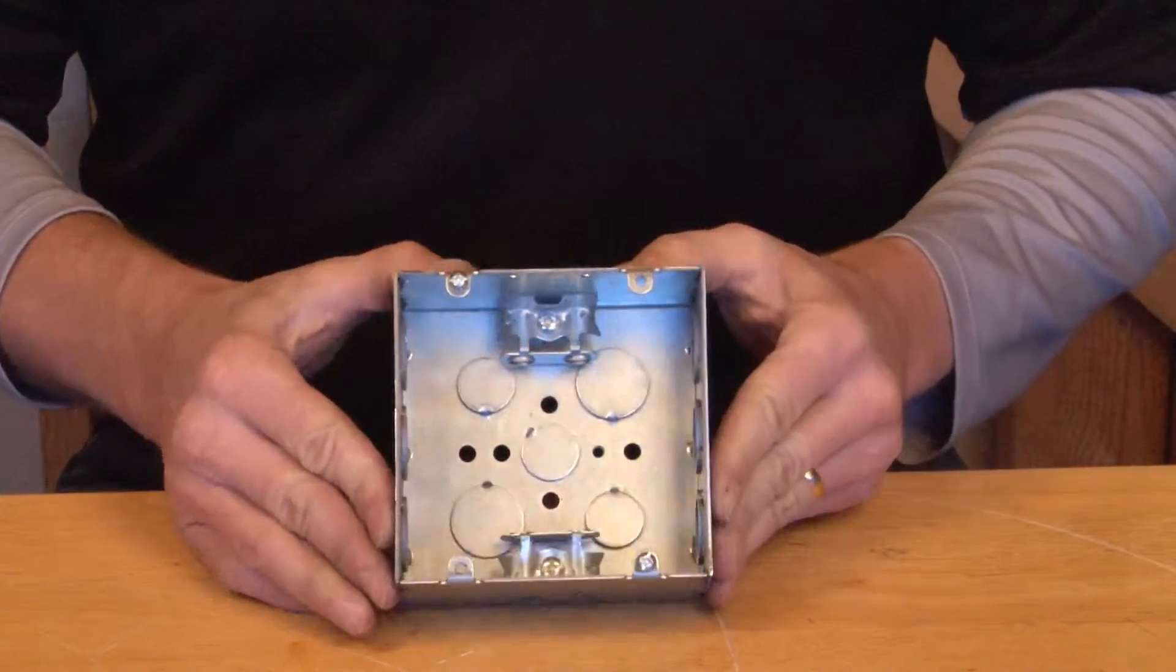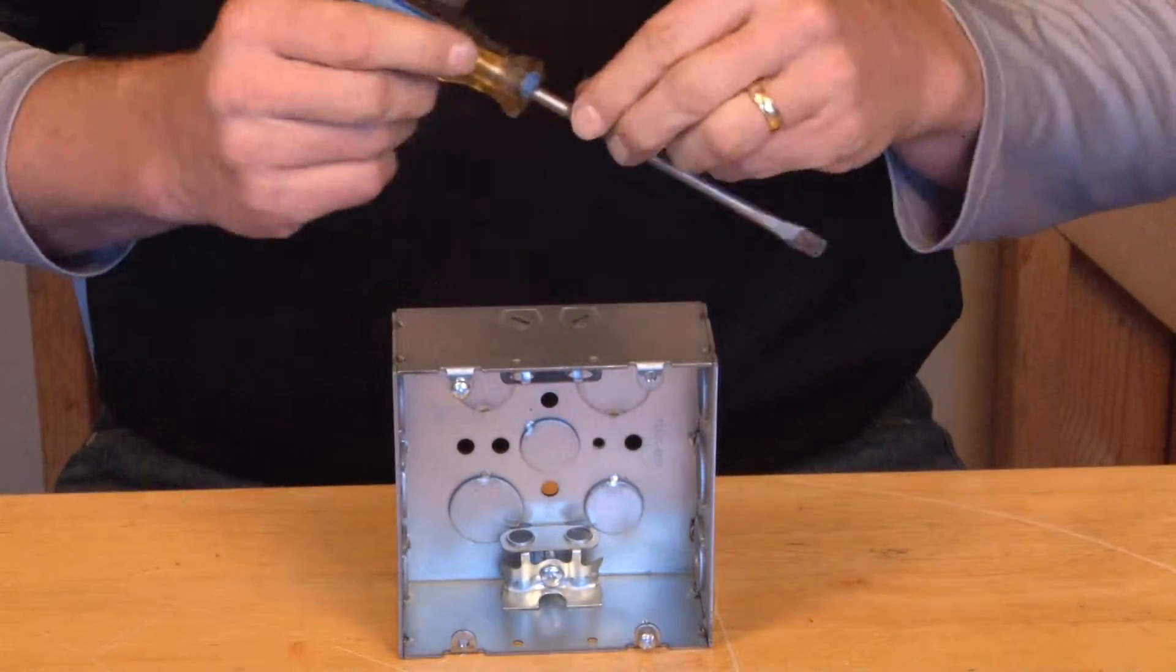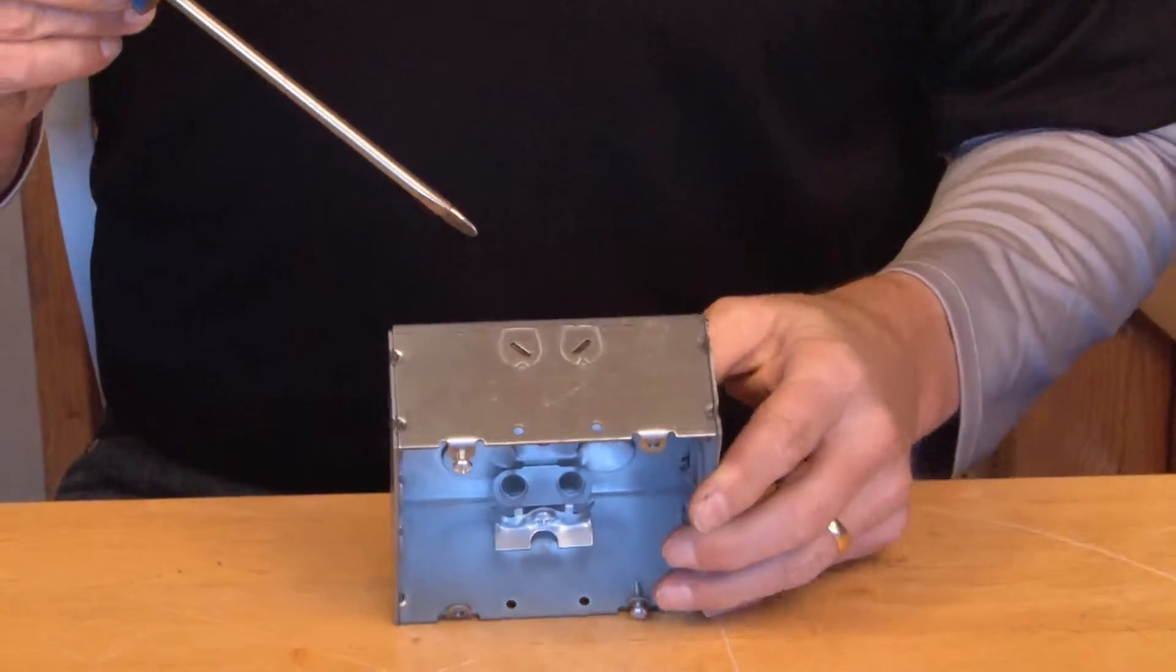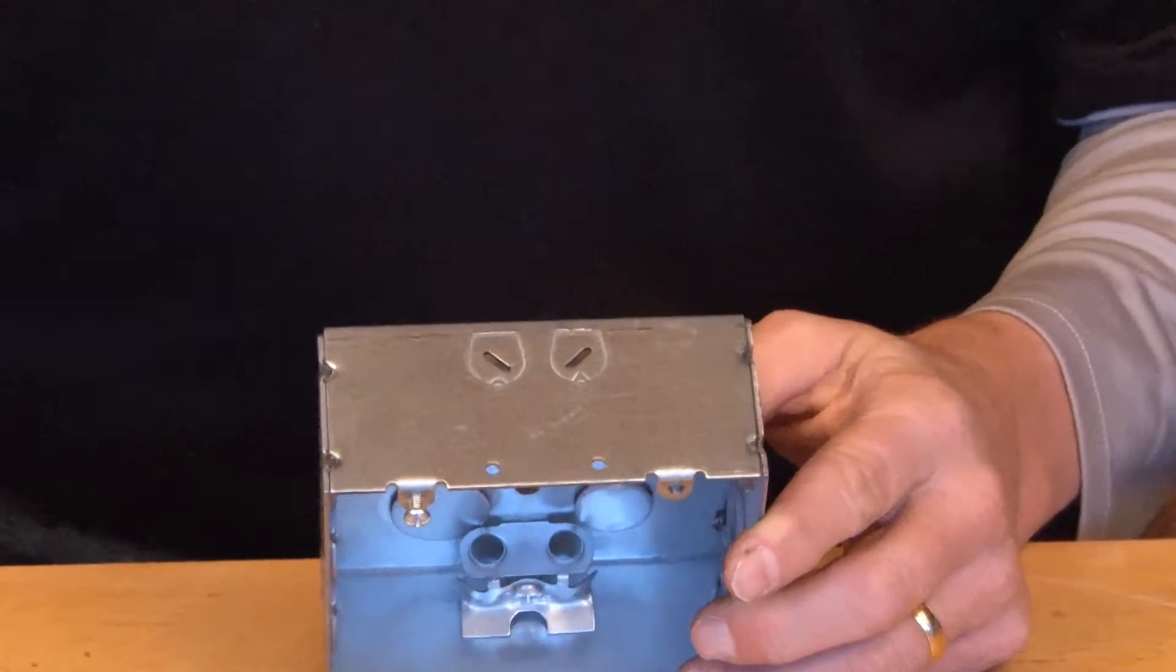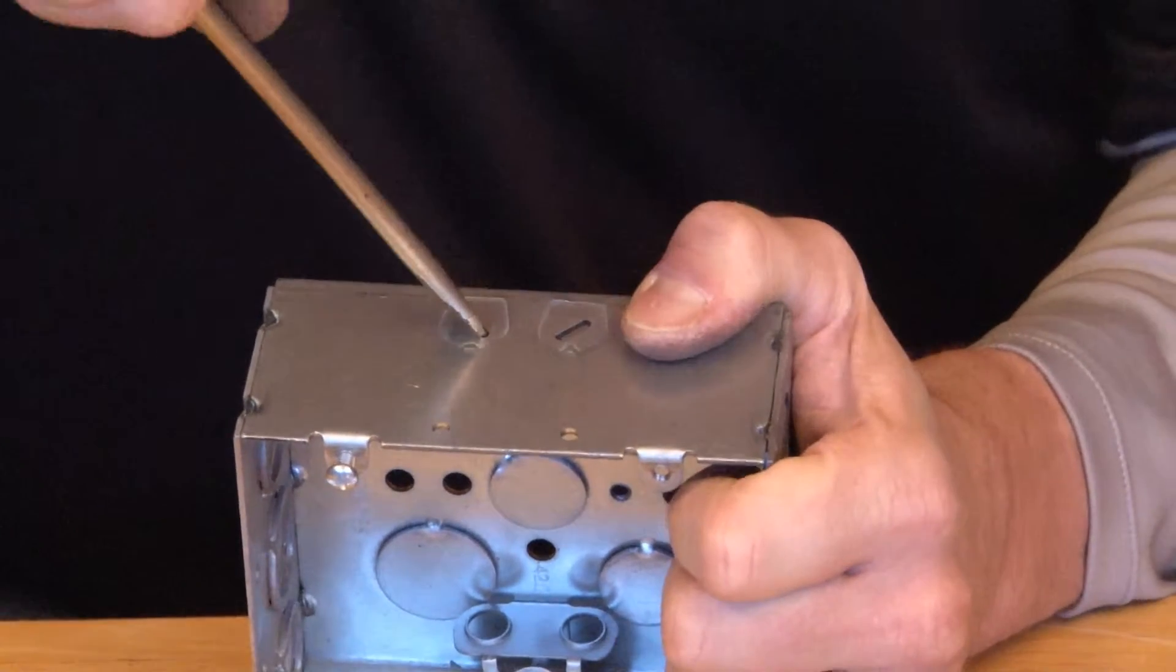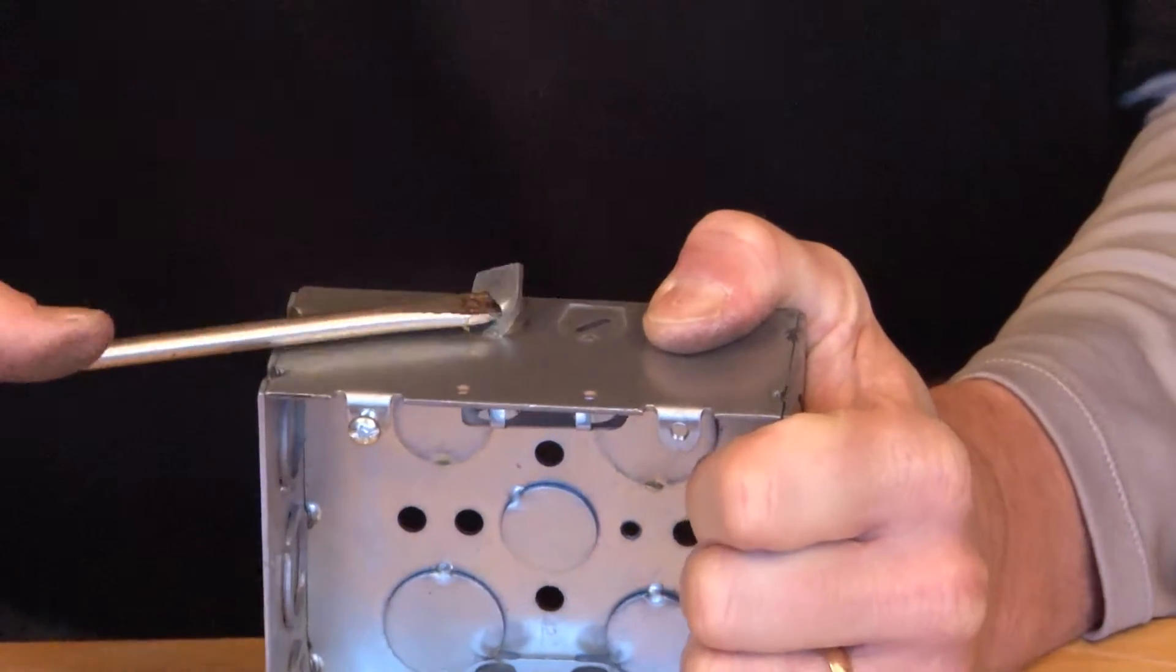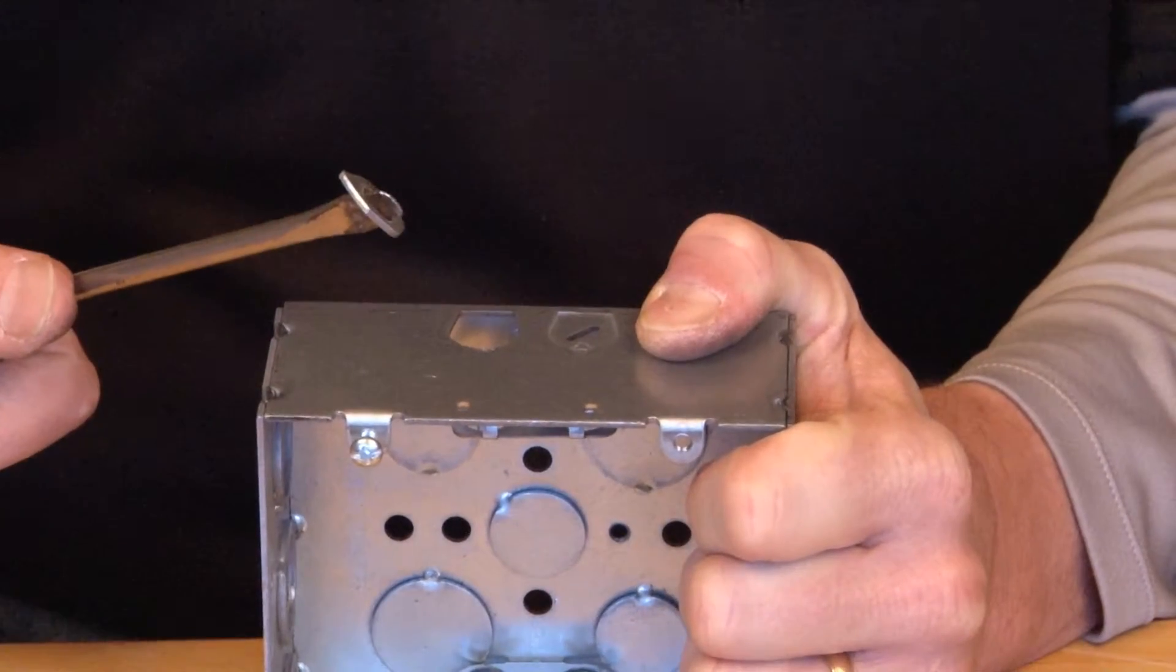When installing BX or flexible metal cable in this box, you simply take your screwdriver and remove one of the slugs quickly and easily by twisting. As you can see, it pops up quick and easy. You bend it back the other direction and it comes right out onto the screwdriver.